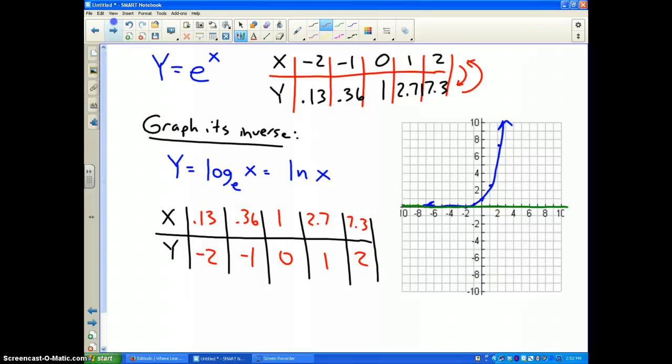0.13, negative 2 is going to be, that's as best I can right there. 0.36, negative 1 is going to be about right there. 1, 0. 2.7, 2.71 is, well, not quite there, maybe about right there. And 7.32, 7.32 is about right there.